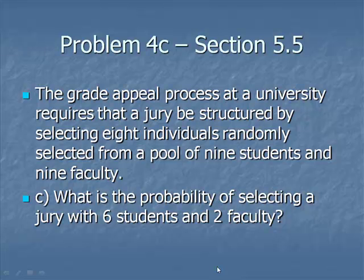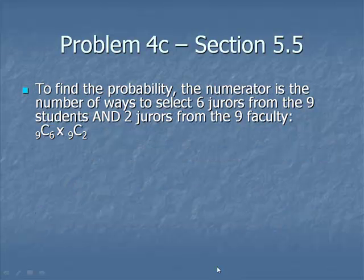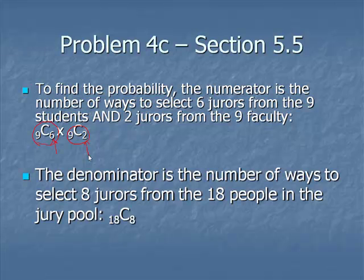Finally, this time we're looking for the probability of selecting a jury with 6 students and 2 faculty. Well, we start off by determining the number of ways that we can select 6 of the 9 students. That's a combination. 6 of the 9 students. And we're going to multiply that by the number of ways to select 2 of the 9 faculty. The denominator is going to be the same here, 18C8.